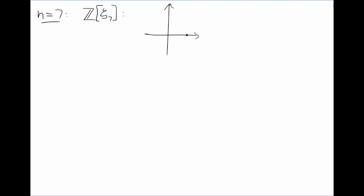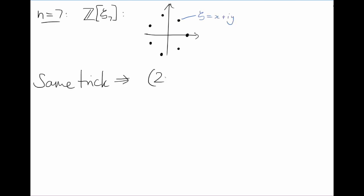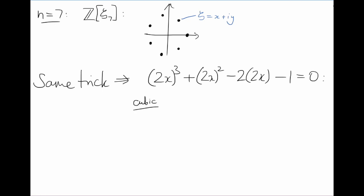The seventh roots of unity look like this. If we write zeta equals x + iy, I'll leave you to check using the same trick as before that we get the equation (2x)³ + (2x)² − 2(2x) − 1 = 0. Now a cubic equation in 2x — there are methods to solve cubic equations, but we can already see that this equation is quite nasty and things are only going to get worse quickly. So let's try something else.